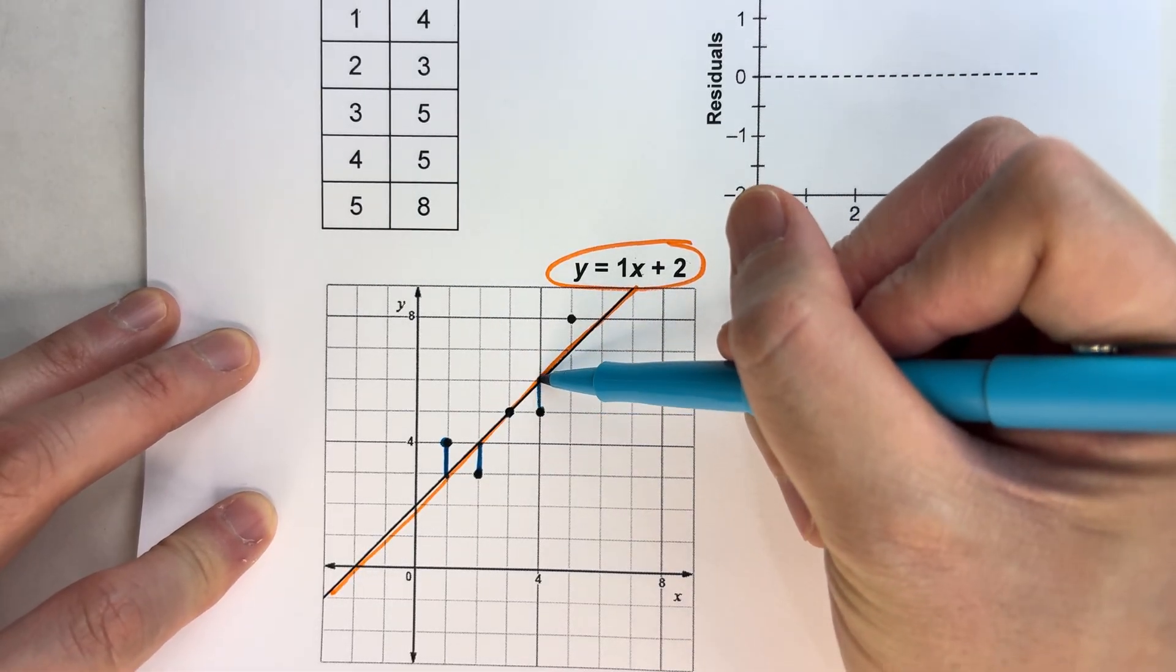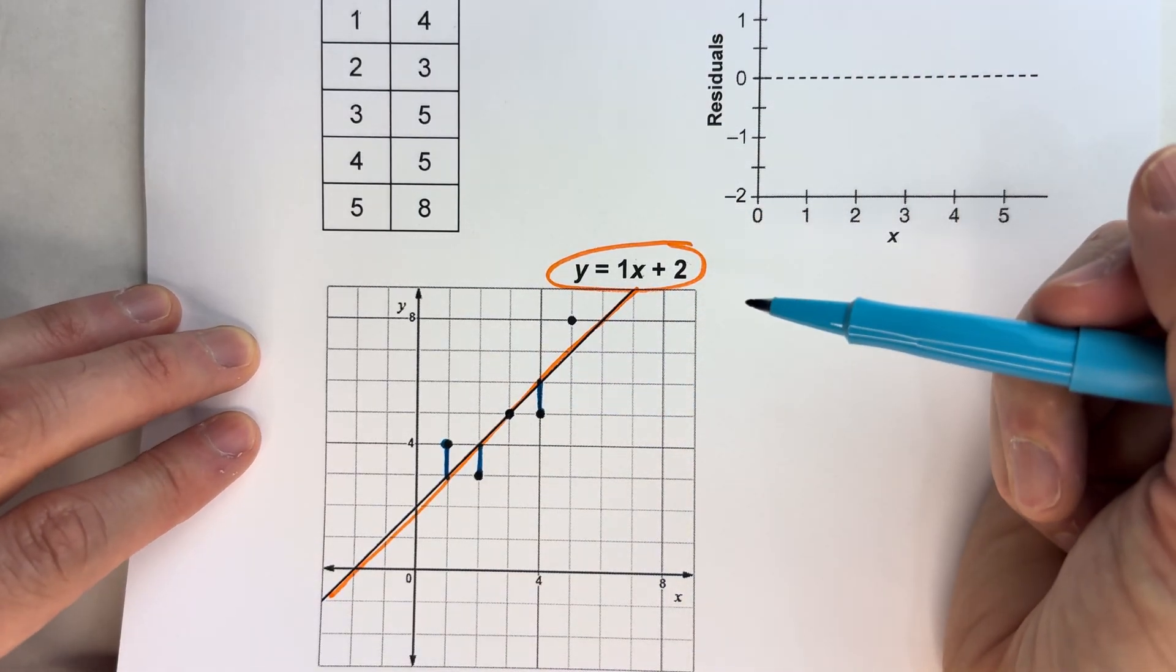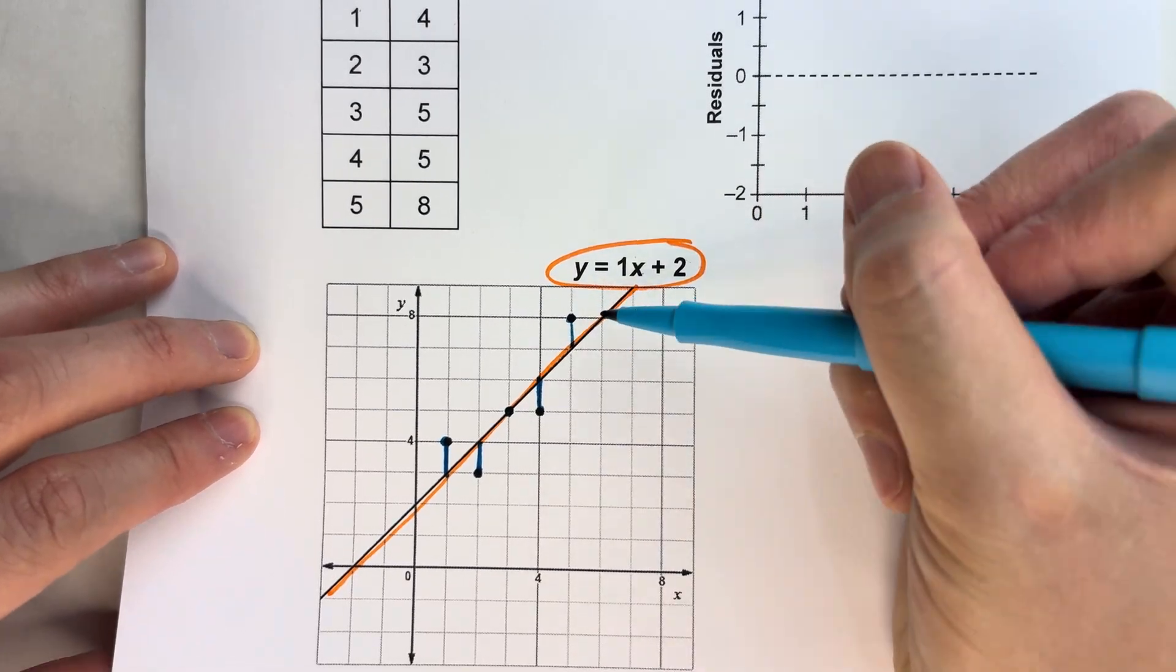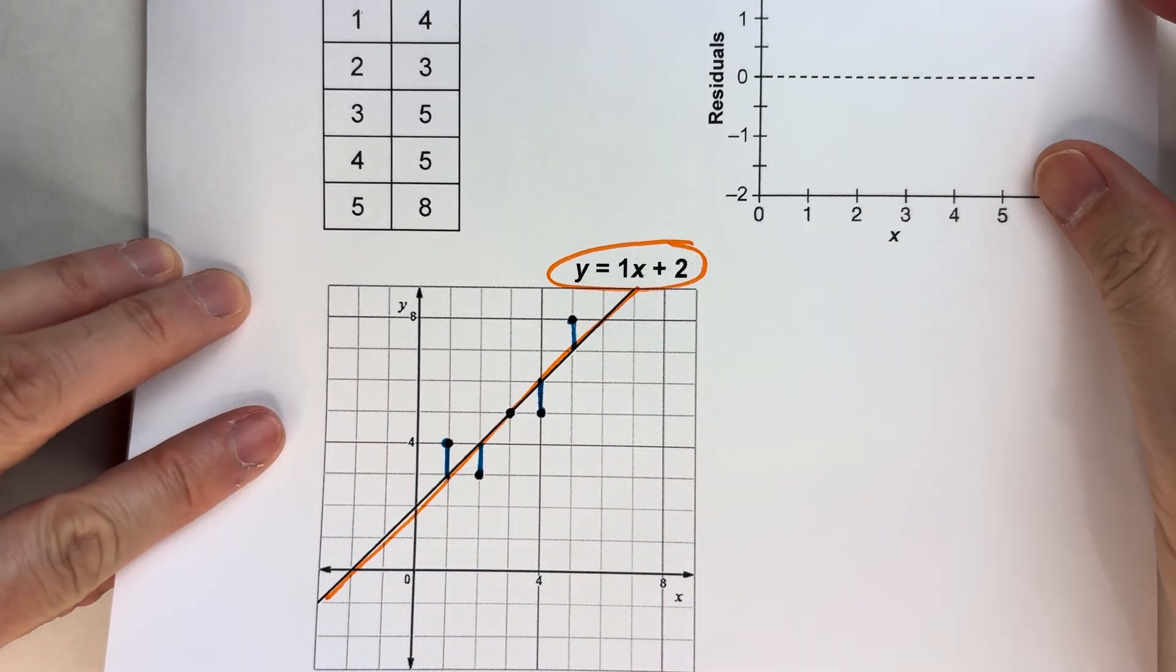Again, this one's 1 below, so it's also negative 1. And this one's 1 above the line, so it has a residual positive 1.